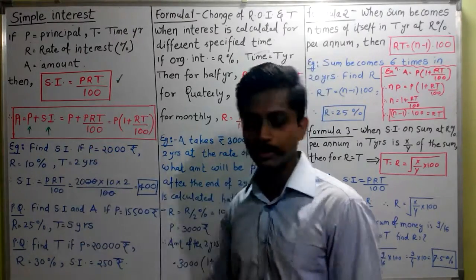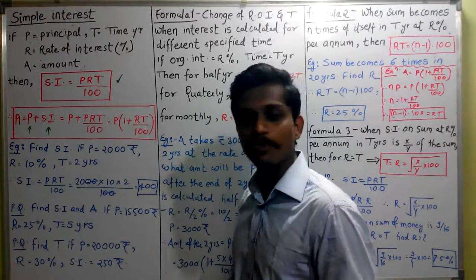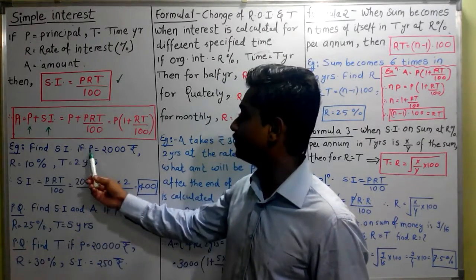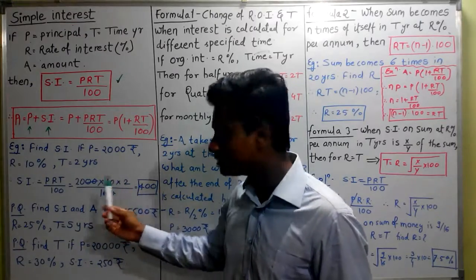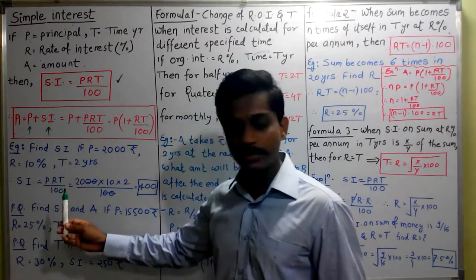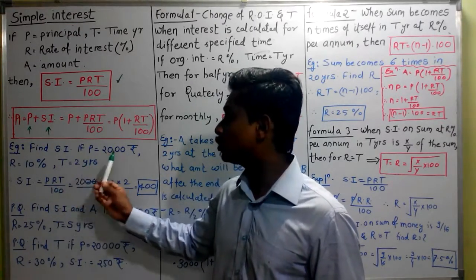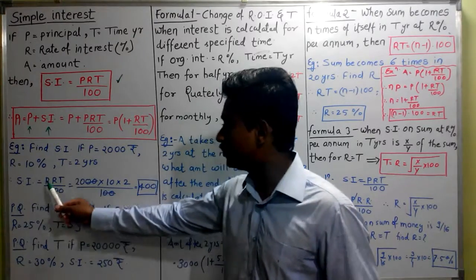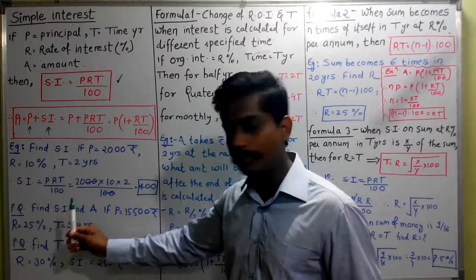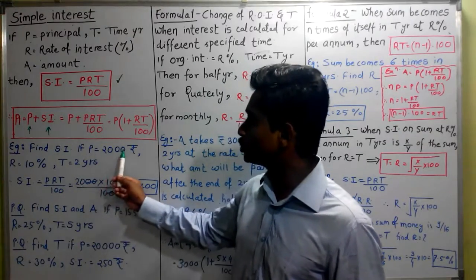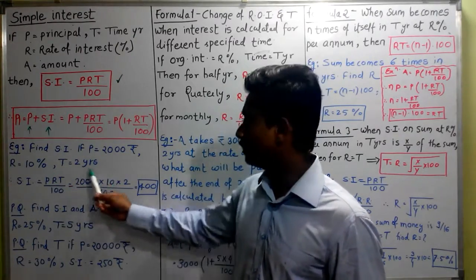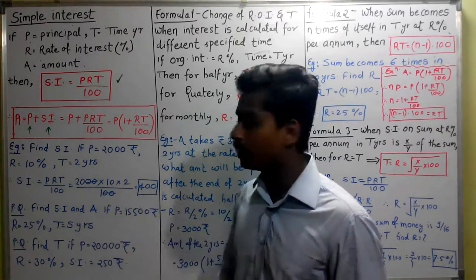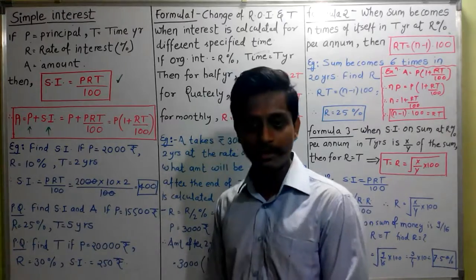Let us solve some numericals. Example: Find simple interest if principal is 2000 rupees, rate of interest is 10%, and time duration is 2 years. Simple interest will be equal to PRT upon 100, which is 2000 times 10 times 2 divided by 100. So 400 rupees will be your simple interest.